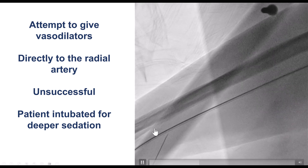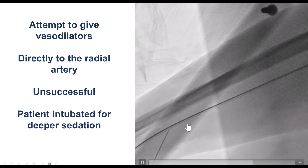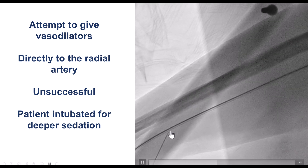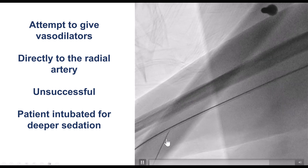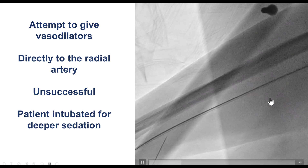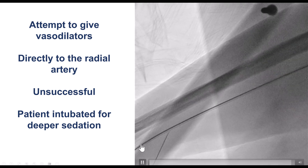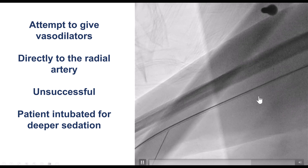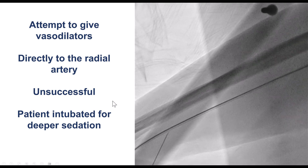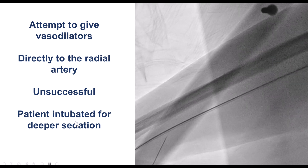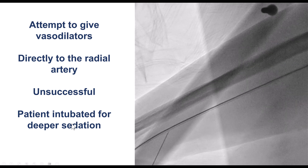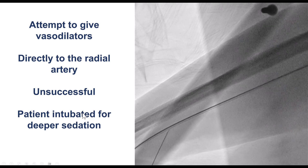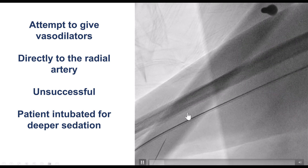In the meantime, we also gave vasodilators — injecting nitro directly next to the artery along the course of the forearm. But again, we were unable to retrieve the entrapped catheter. After failure of the propofol, the patient was intubated and placed under general anesthesia.